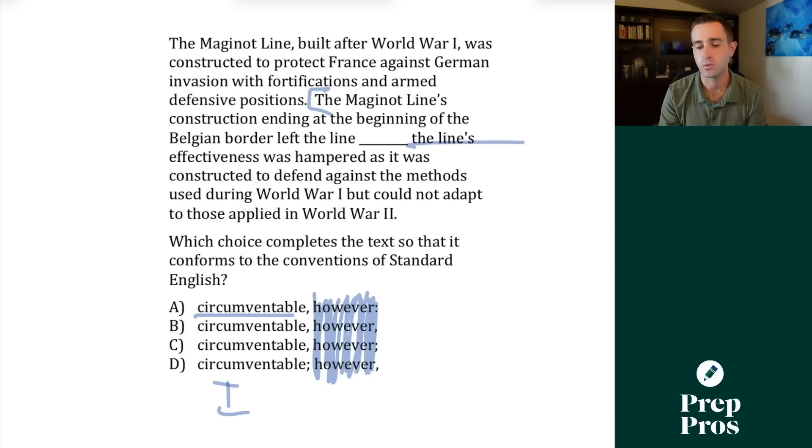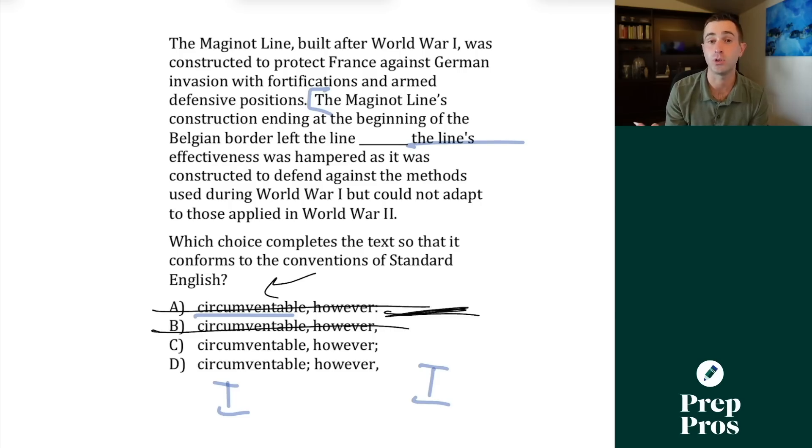Now we'll read the part after. The line's effectiveness was hampered as it was constructed to defend against the methods used during World War I, but could not adapt to those applied in World War II. Well, this is another independent clause. So we need period, semicolon, comma fanboys. Sometimes we can even use a colon or a single dash, but only if the part following is giving explanation, definition, clarification about what we talked about. This part is not giving that explanation, definition, clarification about being circumventable. So we can get rid of A and we can get rid of B because those don't work with our basic grammatical rules.